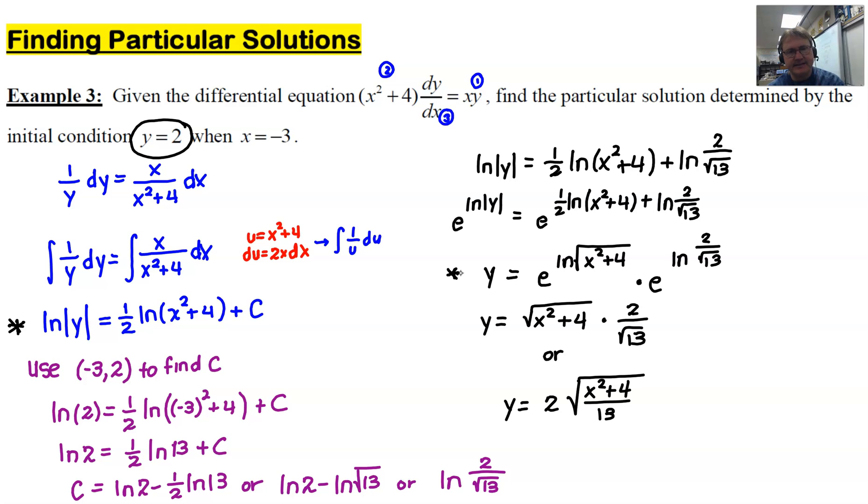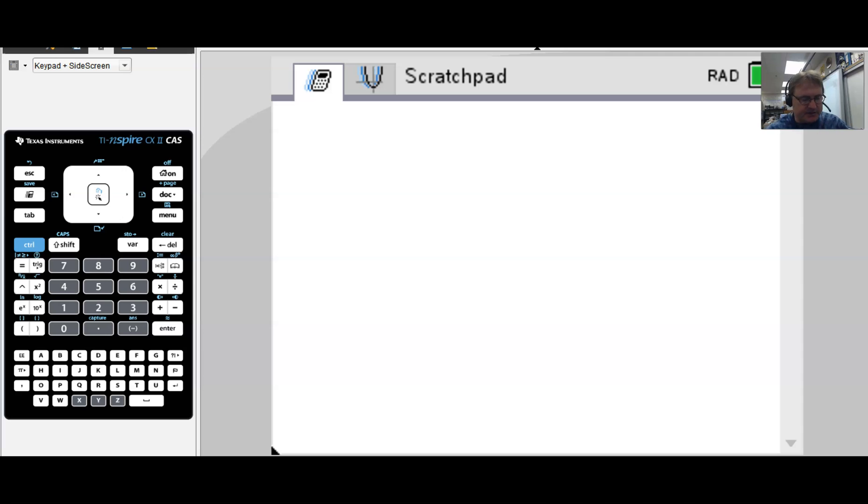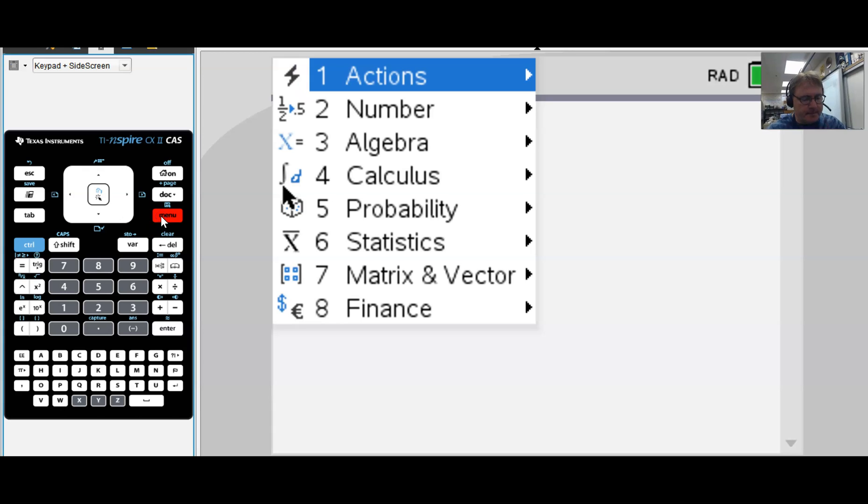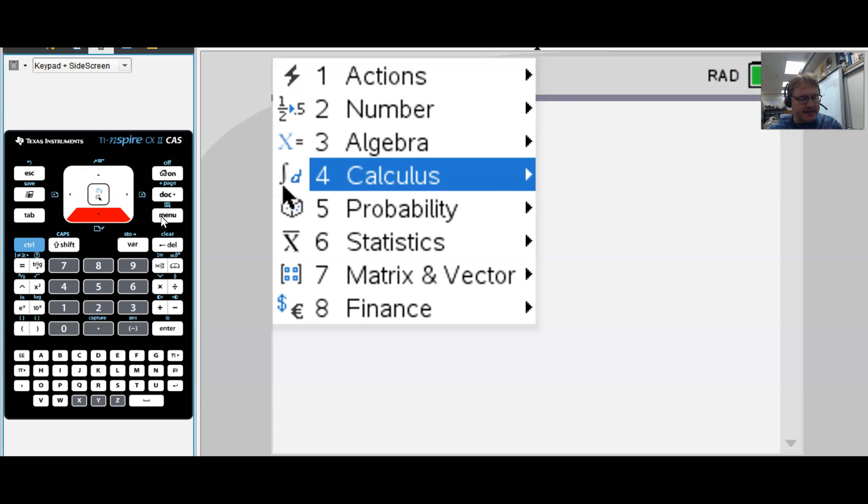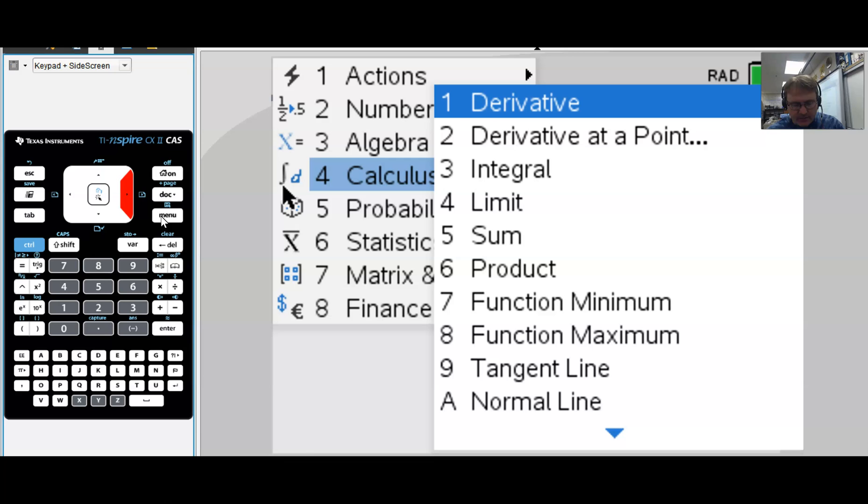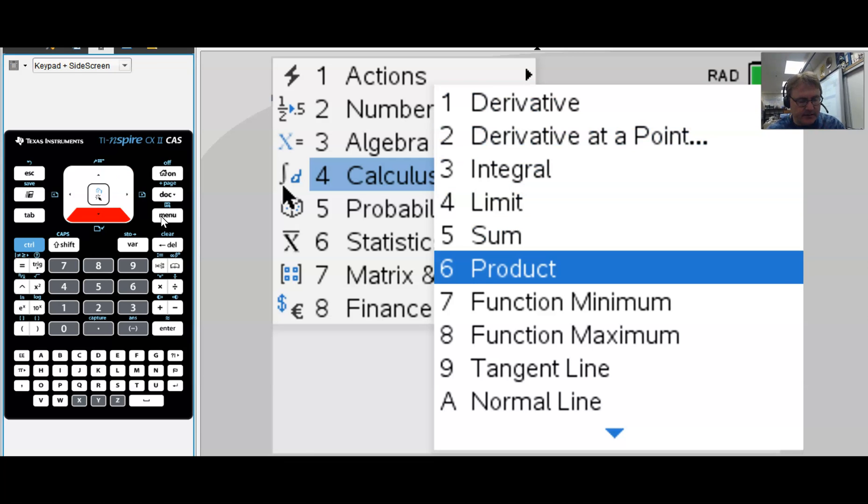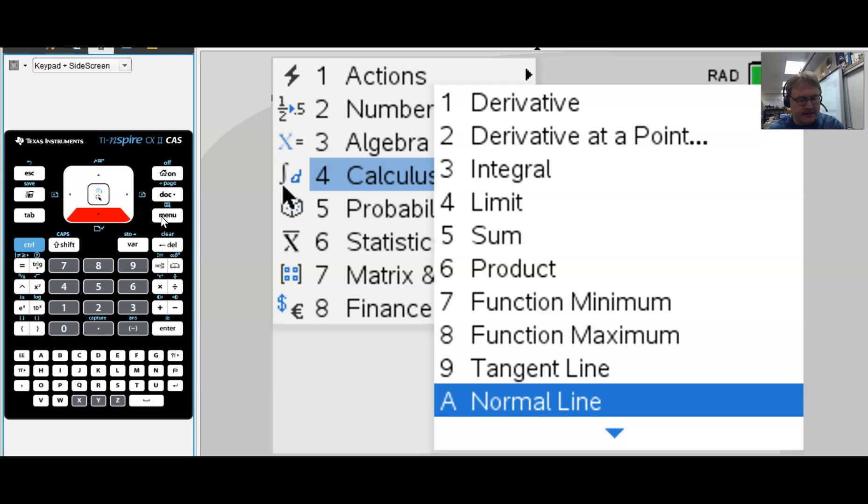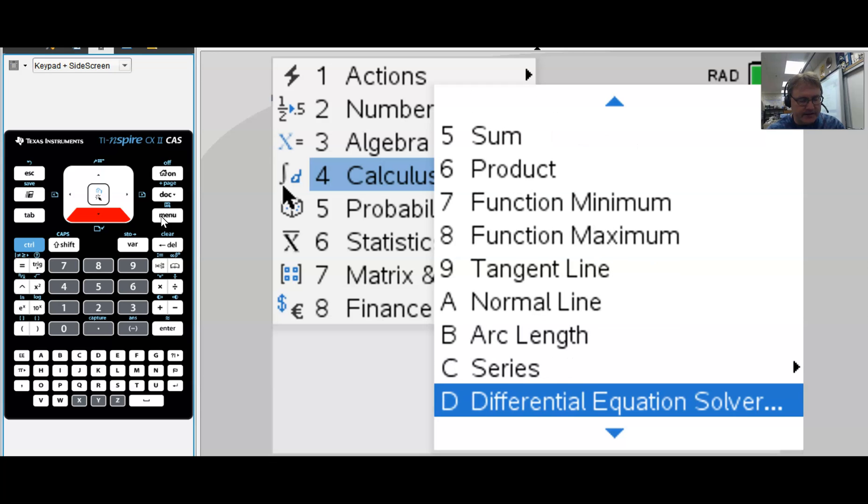I want to take a second and show you a very cool thing on the graphing calculator. Notice I am in a scratch pad calculator screen. You can do this either in a scratch pad or a document. You just need to be on a calculator type of page. I'm going to go into menu, and I'm going to choose calculus option. I'm going to pick something that we have never done before. You have to scroll down a ways more until you get to this option D called differential equation solver. Hit enter.